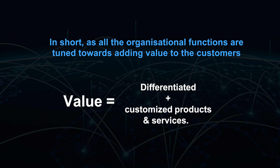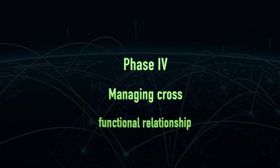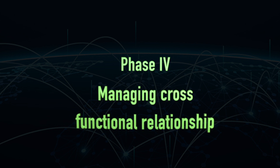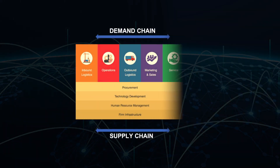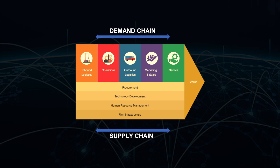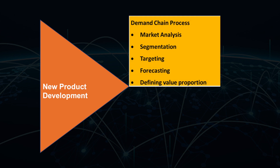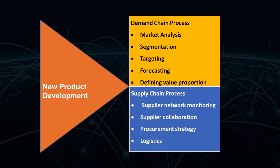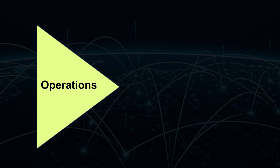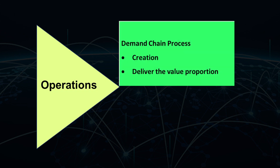Phase 4: Managing cross-functional relationships. Activities of supply chain and demand chain spread across all the functional activities across the value chain. The value chain activity of new product development is linked to the demand chain processes of market analysis, segmentation, targeting, forecasting, defining value propositions, and the supply chain processes of supplier network monitoring, supplier collaboration, procurement strategy and logistics.